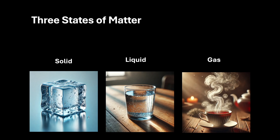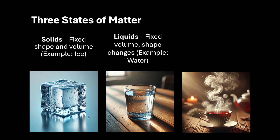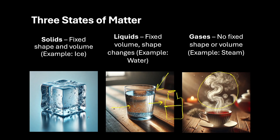Solids have fixed volume and they will always have a fixed shape as well. Liquids have fixed volume, but the shape is not going to be fixed. For example, if I pour this glass of water into a bottle, the shape of the water will become that of the bottle. And if we talk about steam, clearly there is no fixed shape and there is no fixed volume.